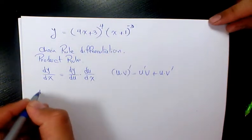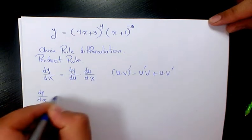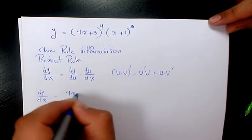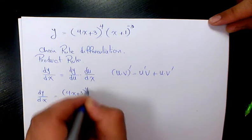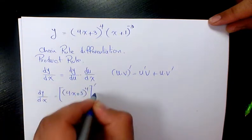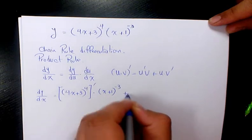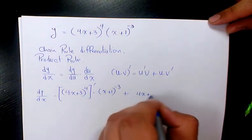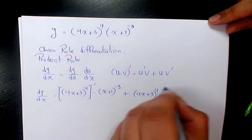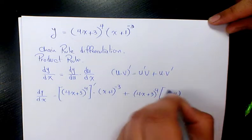So dy/dx will be the derivative of (4x + 3)^4 times (x + 1)^(-3), plus (4x + 3)^4 times the derivative of (x + 1)^(-3).